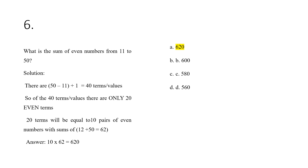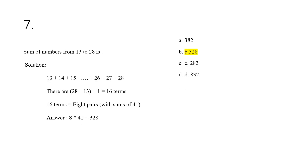For number six, the sum of even numbers from 11 to 50. We account for the total terms: 50 minus 11 plus 1 equals 40 terms, and picking only even numbers gives 20 terms. These 20 terms form 10 pairs of even numbers each summing to 12 plus 50, or 62, giving a final answer of 10 times 62, which is 620.